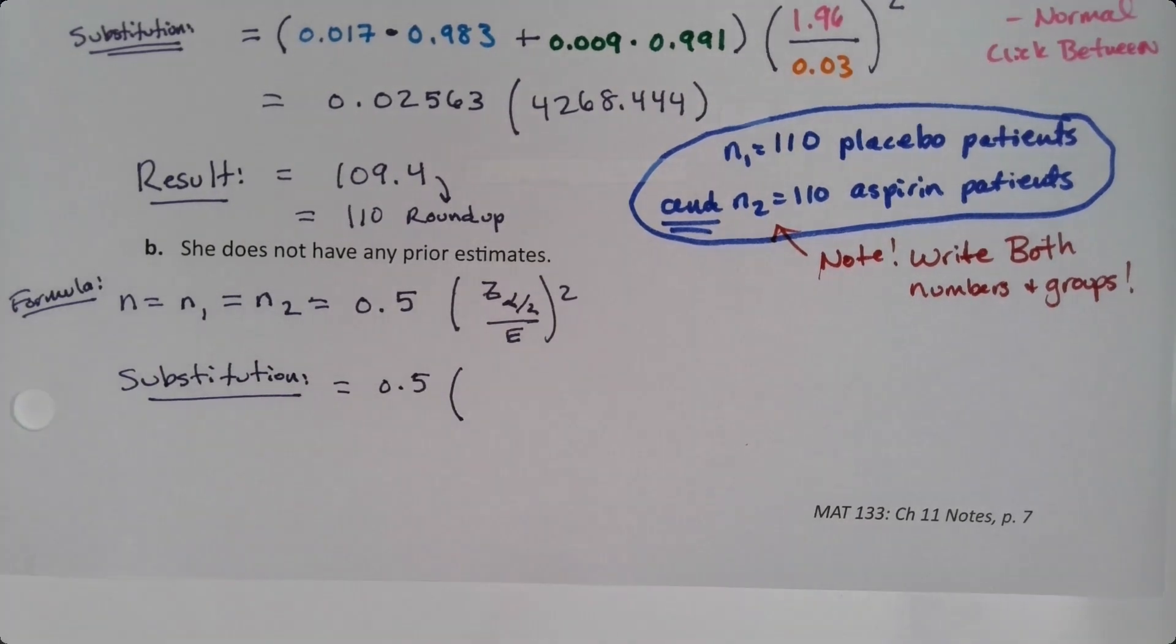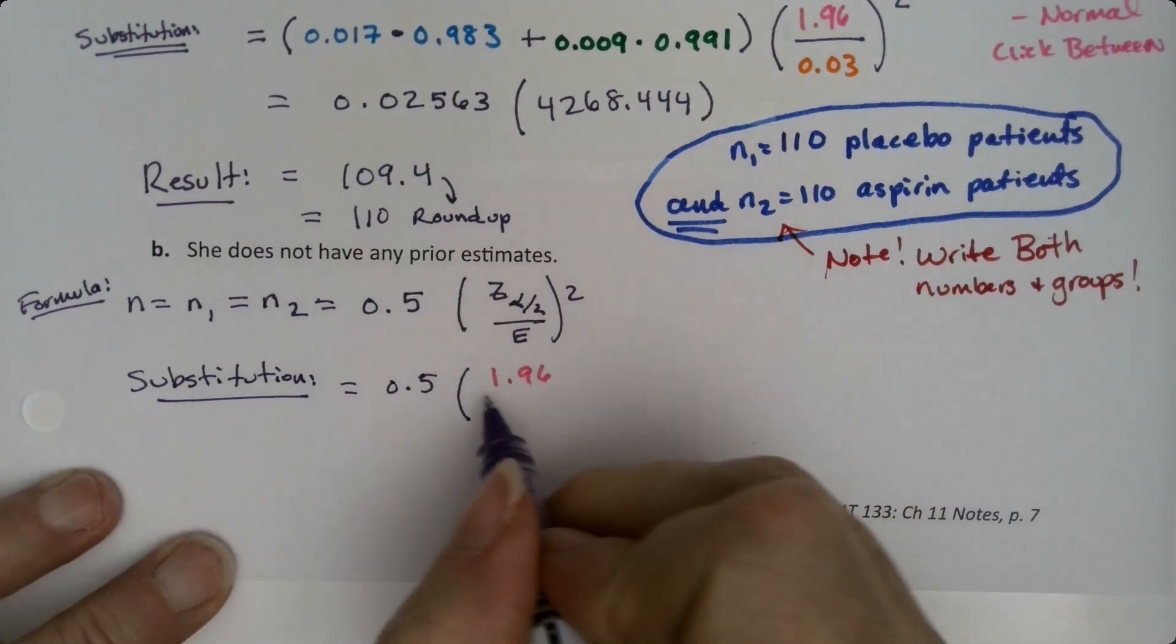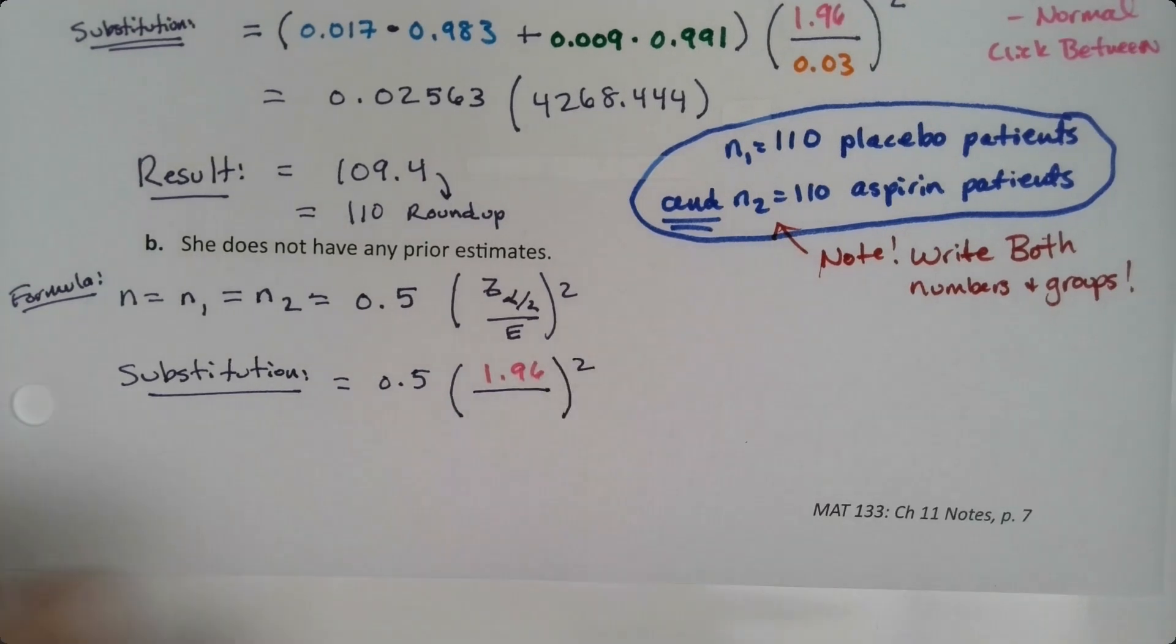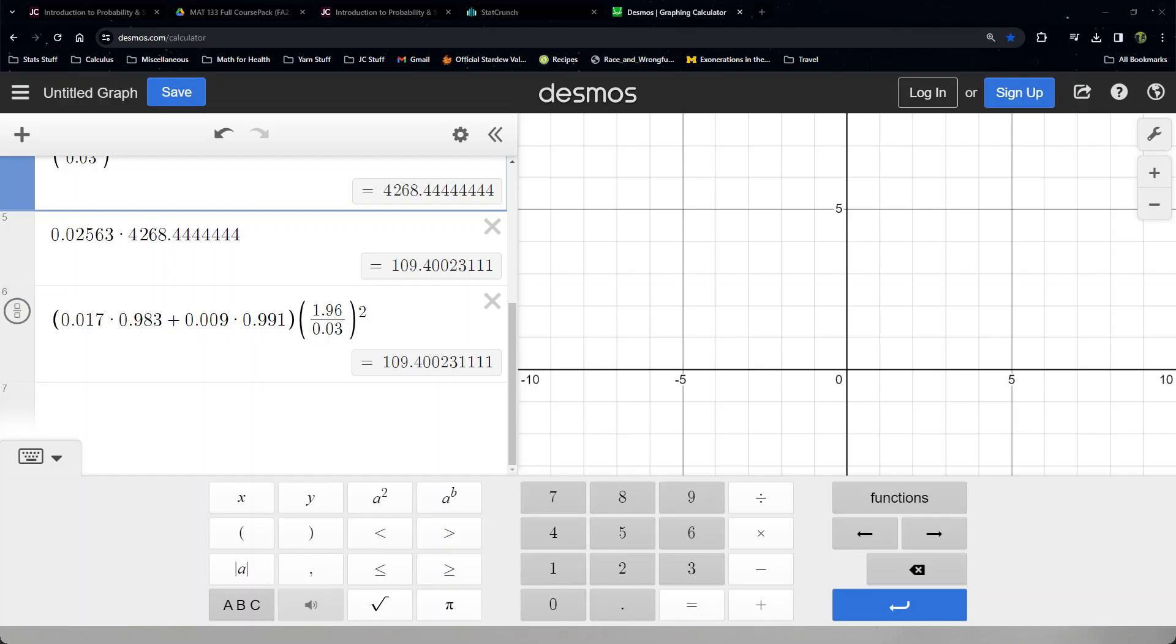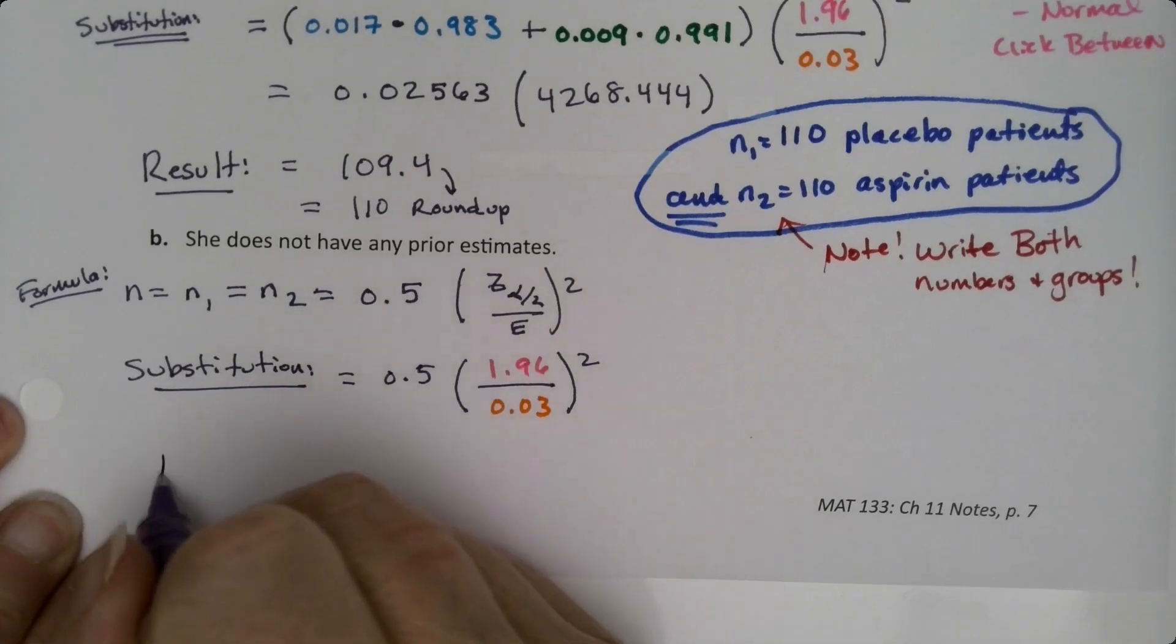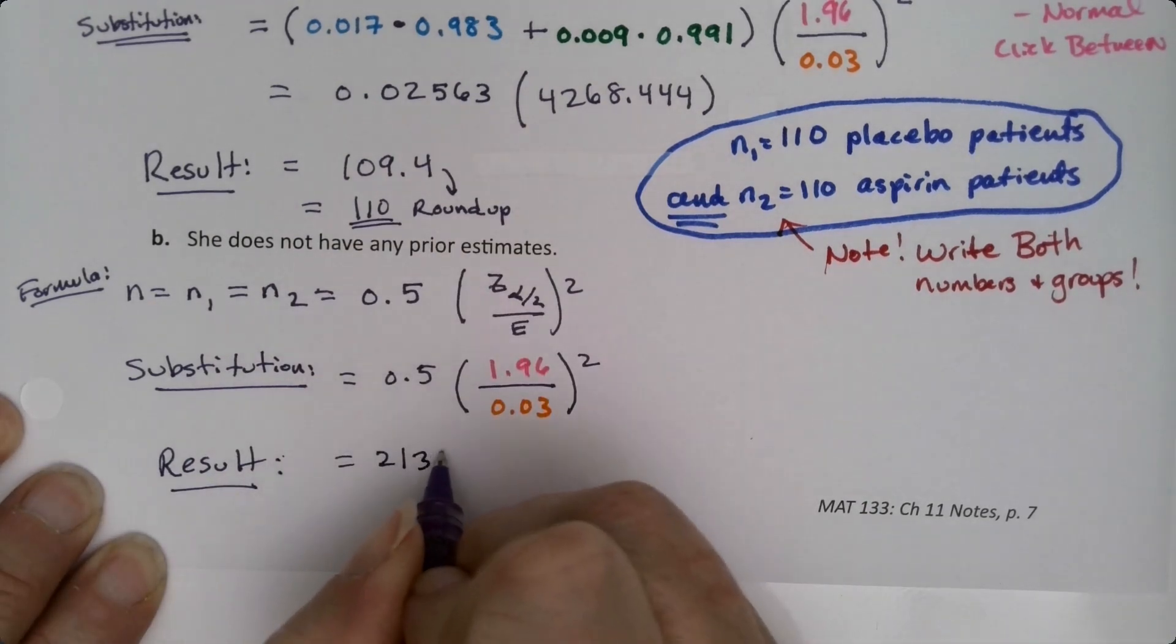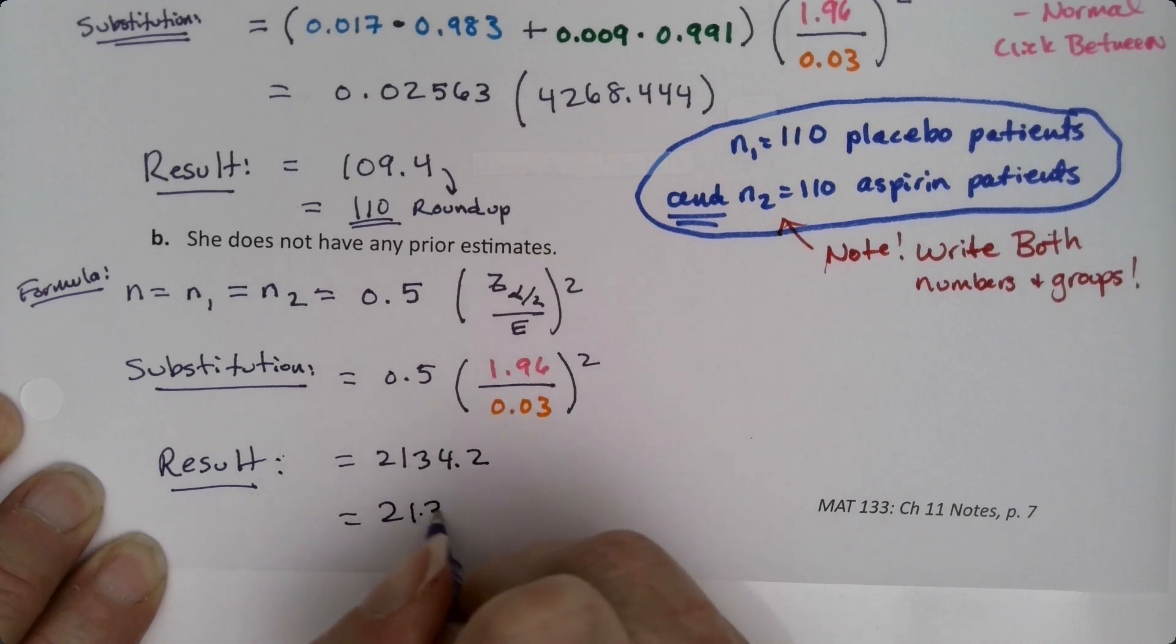And it's the same numbers we found before because it didn't change. Right. It's still a 95% confidence. And the error is still 0.03. We didn't change from part A to part B. So all we need to do is go back to Desmos. And that one's easy to type as one big thing. You just say, what's 0.5 times 1.96 over 0.03 squared? And we get 2134.2.